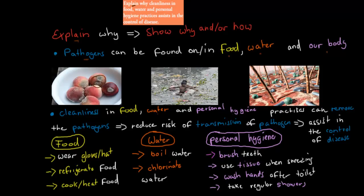You've got pathogens that can be in food, water, or on our skin or body. If we have good practices when it comes to food, water, and personal hygiene, we can remove those pathogens. And if we remove those pathogens, we reduce the risk of transmission. If we remove pathogens, they can't cause disease. So by having clean practices, we assist in the control of disease by removing pathogens that would otherwise get into our body or someone else's body.